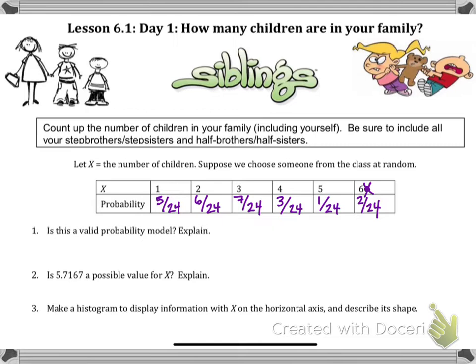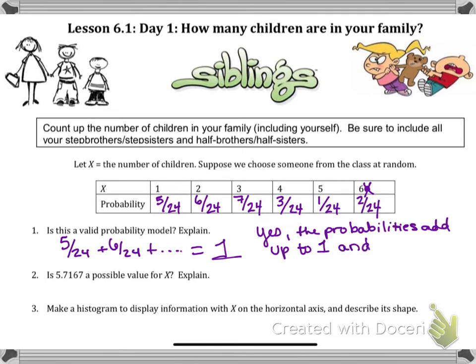Is this a valid probability model? Explain. If I add 5/24 plus 6/24 and so forth, they do add up to be one. So two things: yes, the probabilities add up to one, and each probability is between zero and one.